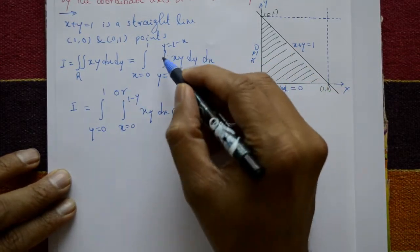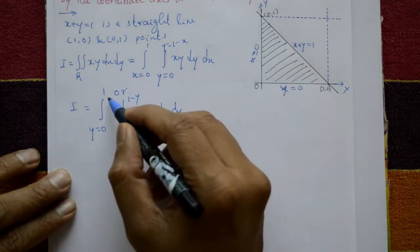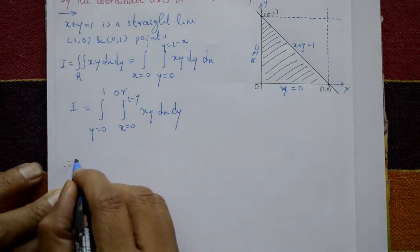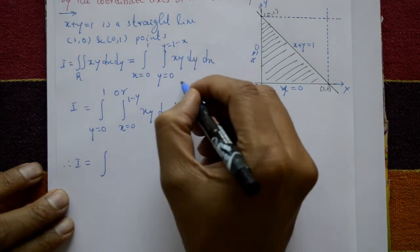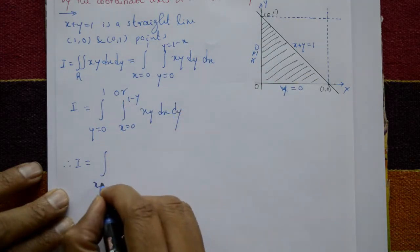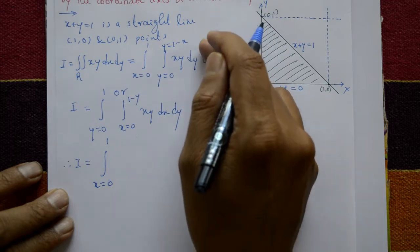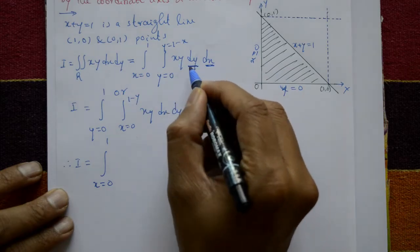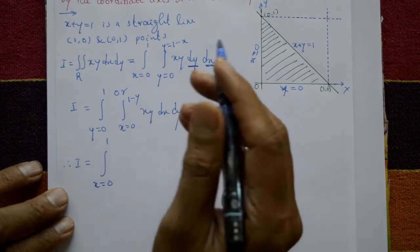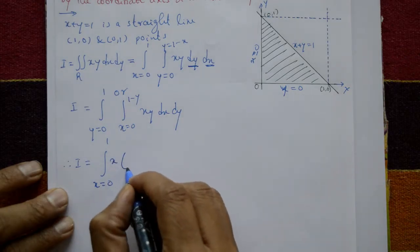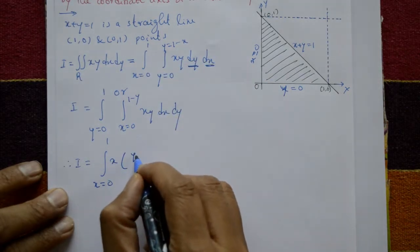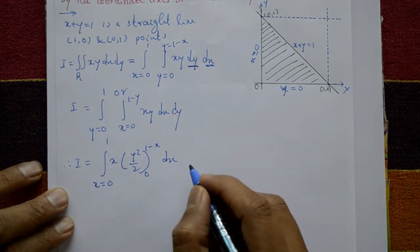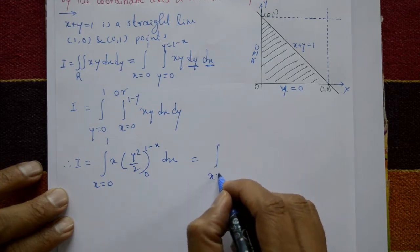Therefore I equals the integral from x = 0 to 1. Integrating with respect to y first, treating x as a constant, x is taken outside. Integration of y gives y squared by 2, with limits 0 to 1 minus x, dx. This gives: integration from 0 to 1 of x times (1 minus x) squared over 2 dx.